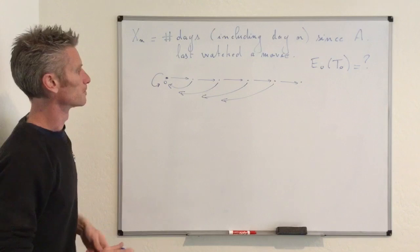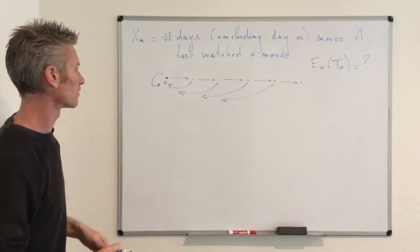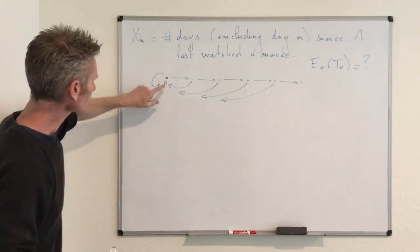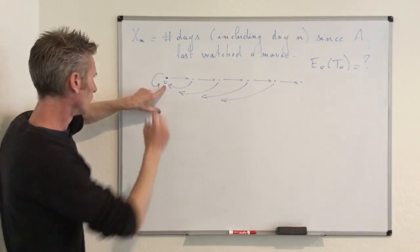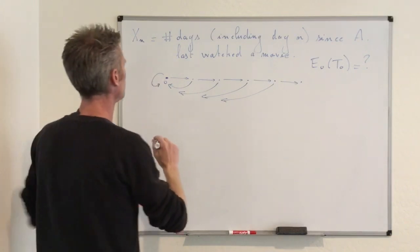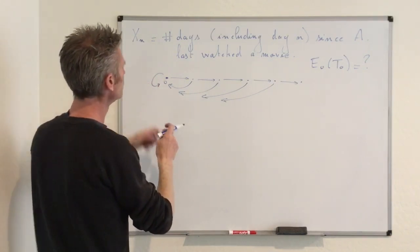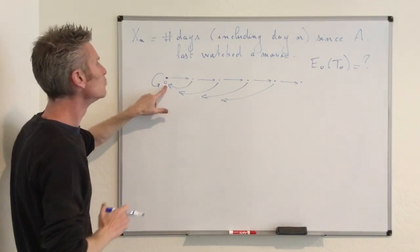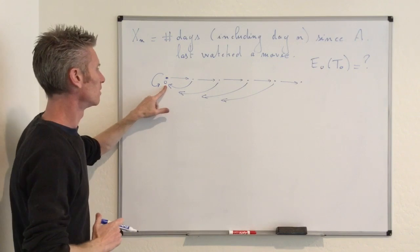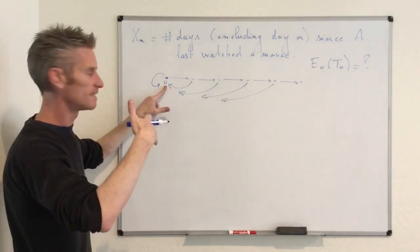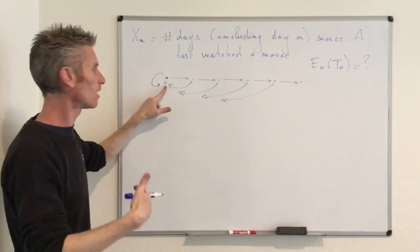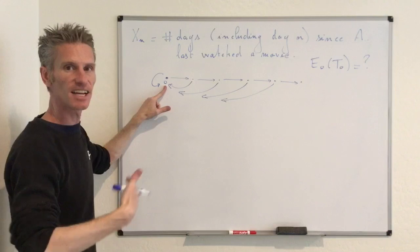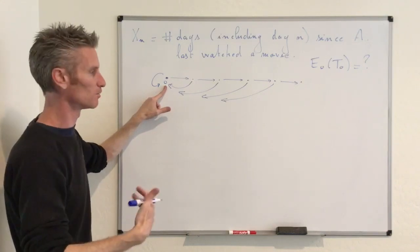X_n equals zero if and only if she goes to watch a movie on day n. This means that the time between consecutive movies corresponds to the mean recurrence time at state zero. We start from state zero, go through those arrows, and want to know how long it takes on average to go back to zero. So the goal here is to compute E_0[T_0], which is the mean recurrence time at state zero.